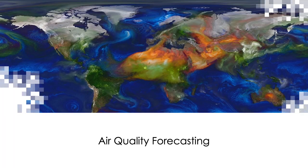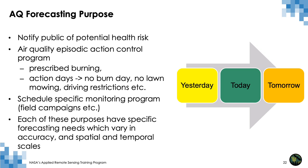So far we have learned about particles, their formation, and weather conditions which may directly or indirectly affect concentration in the atmosphere and near the surface. Now we will learn about forecasting of particle concentrations using various methods. The success of an air quality forecasting program depends not only on accurate prediction but also on meeting the needs and objectives of the forecasting recipients. The major purposes include public health notification, episodic control programs such as action days, and scheduling specialized air quality monitoring programs. Each of these purposes has specific forecasting needs which may vary in accuracy, spatial, and temporal scales.